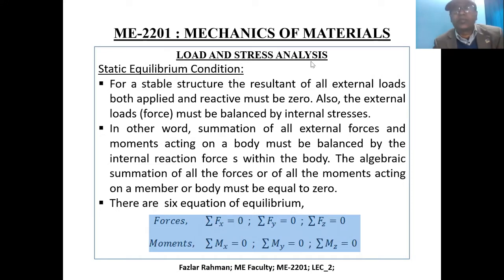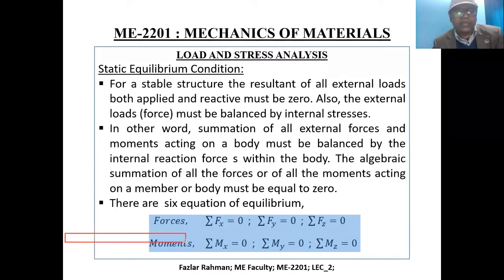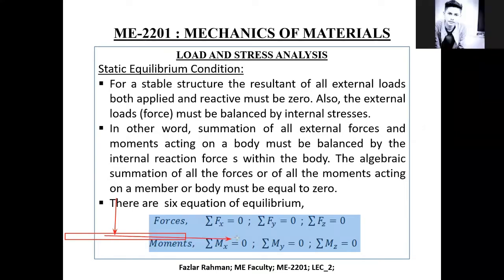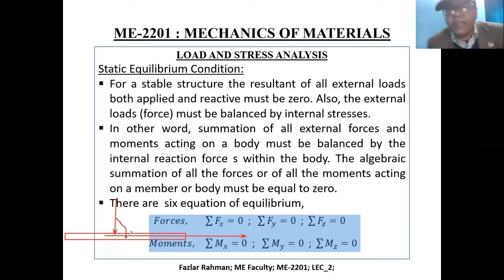For example, this is the beam. If you have support at both ends, with load working in the downward direction, that means the direction of the load makes 90 degrees with the longitudinal axis. So this is called a beam.